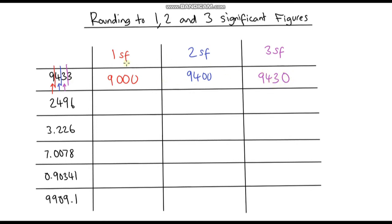I encourage you to pause the video and see if you can round all of these numbers to 1, 2 and 3 significant figures. Assuming you've paused and had a go, let's go through them. For the next number, the 2 is our first significant figure. We look at the digit to the right — that is less than 5, so this number gets rounded down to 2,000.